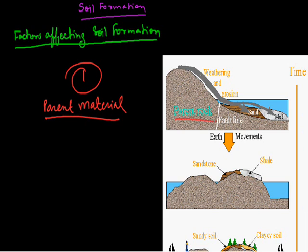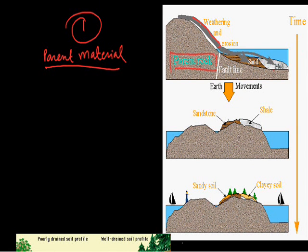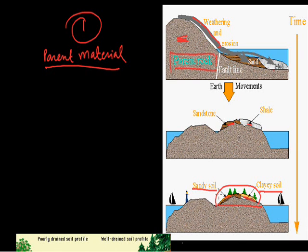As you can see here, this is a parent rock. Through the process of weathering and erosion, we see the making of sands and muds. Slowly it eroded and changed into soil, shell, and sandstone. This became a sandy soil and this became a clay soil, where vegetation developed. So whatever clay soil and sandy soil is made here all depends on the parent rock it came from.